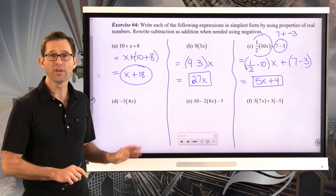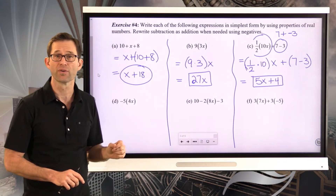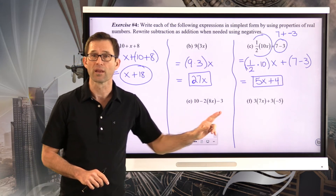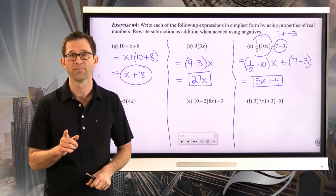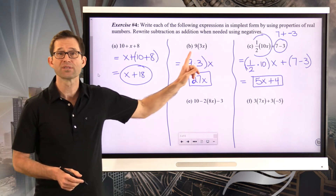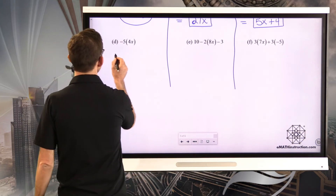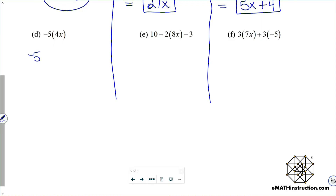Pause the video now and see if you can simplify the remaining expressions. Some will be very simple, like letter D, and some might be more complicated, like letters E and F. For letter D: negative 5 times 4x. I can rewrite that as negative 5 times 4 times x. A negative times a positive is a negative — specifically negative 20 — giving negative 20x.